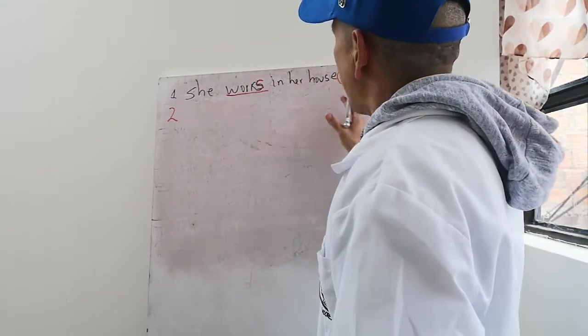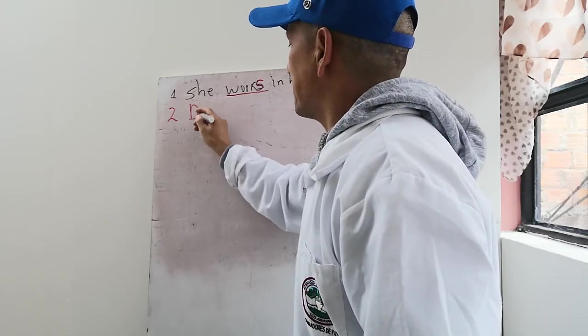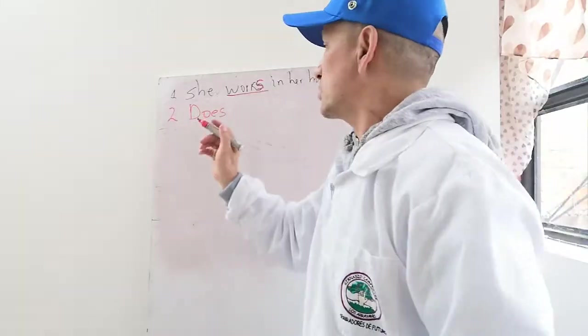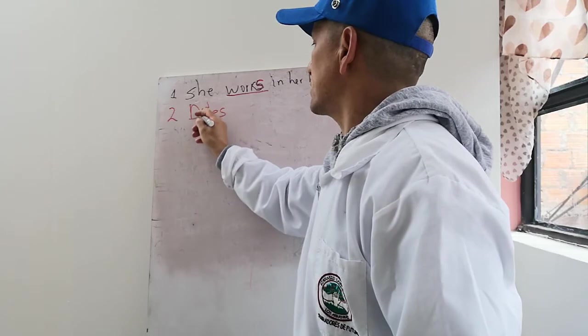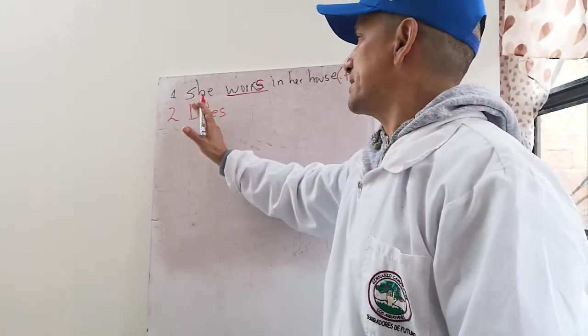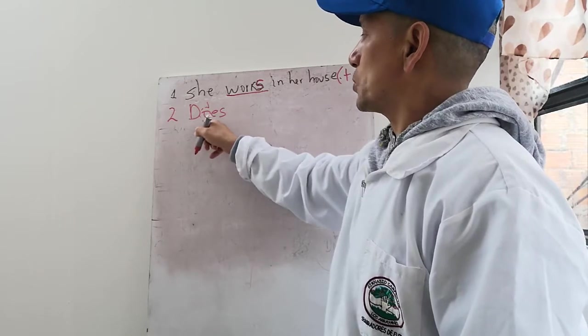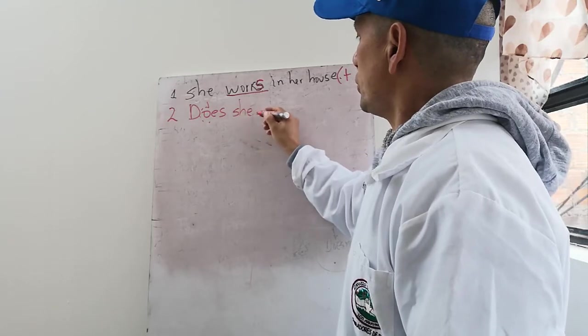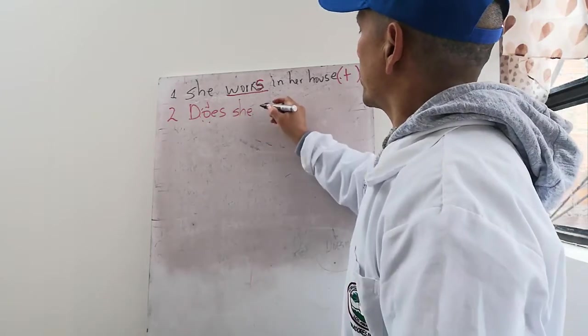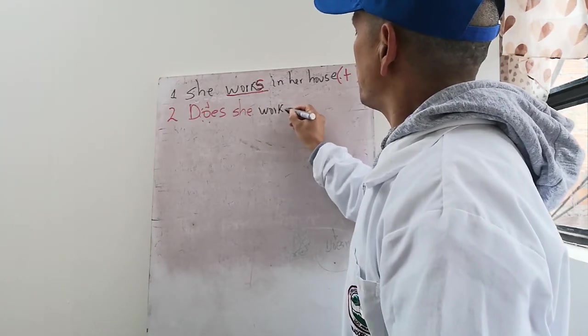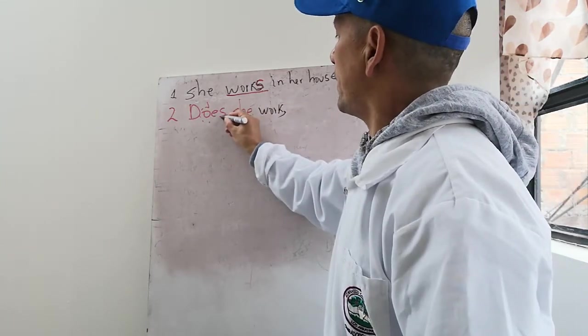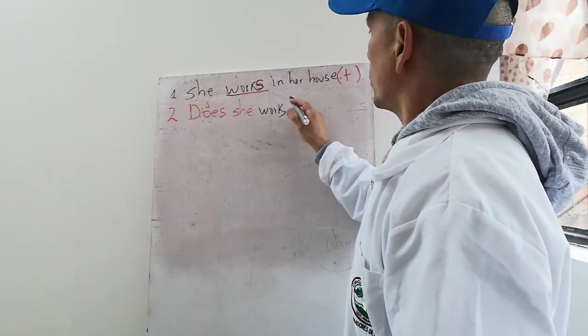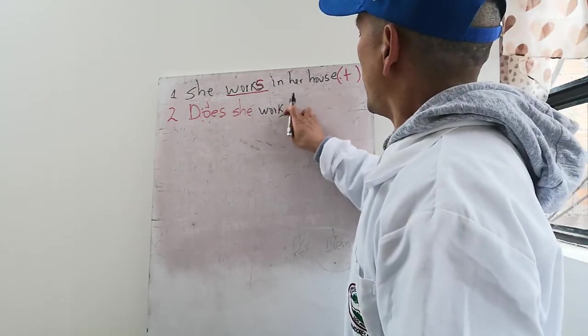En el segundo, vamos a hacer preguntas. Para hacer preguntas con tercera persona utilizamos DAS. DAS para nuestro español es como si fuera un signo de pregunta. Entonces como en inglés no existe el signo de pregunta al principio sino solamente al final, entonces por eso colocan DAS. Note que coloco she y cuando llego a work ya no coloco works, no coloco esta S porque aquí ya la lleva el DAS. Cuando hago preguntas no coloco la S al verbo.